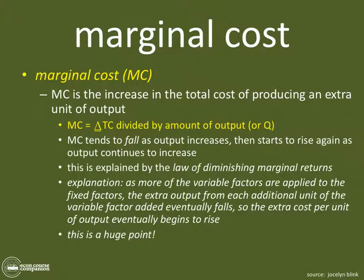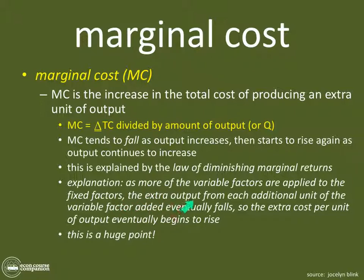Let's look at marginal cost, which is actually the most important factor here — the marginal cost curve is going to be very important as we move forward. MC is the increase in the total cost of producing an extra unit of output. You make one more thing — how much do your costs change? That's the marginal cost. MC equals the change in TC divided by the change in output, or Q. MC tends to fall as output increases, then starts to rise again. This is explained by the law of diminishing marginal returns.